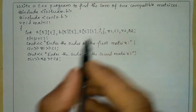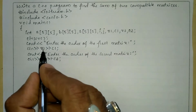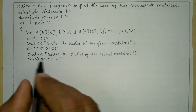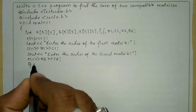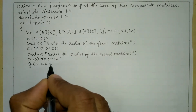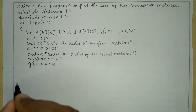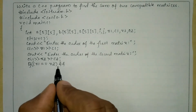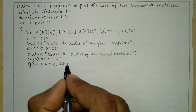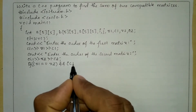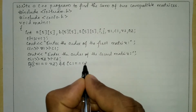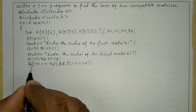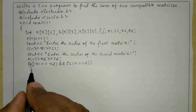Now compatibility means we have to check whether the number of rows and number of columns of both matrices are equal or not. For that I write: if R1 is equal to R2, and using logical AND, C1 is equal to C2. If both of these two conditions satisfy, then the control enters into the body of the if statement.